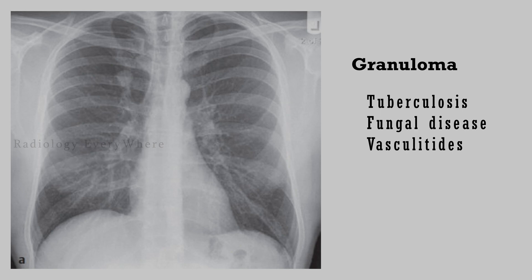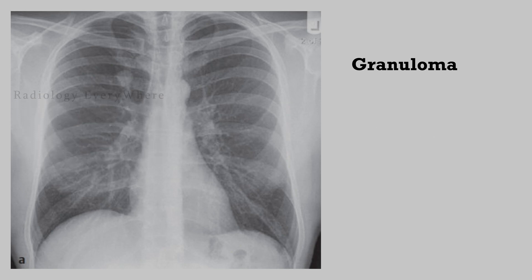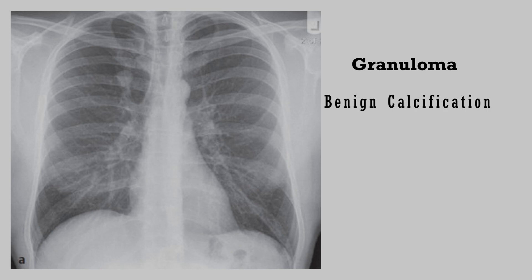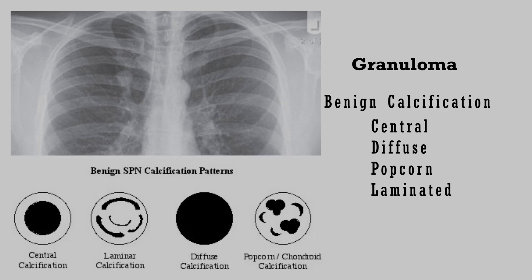fungal disease, and vasculitides. Radiographically, the granuloma can present as solitary or multiple pulmonary nodules. In granuloma, you can see benign types of calcifications — for example, central, diffuse, popcorn, or laminated. If you see this kind of